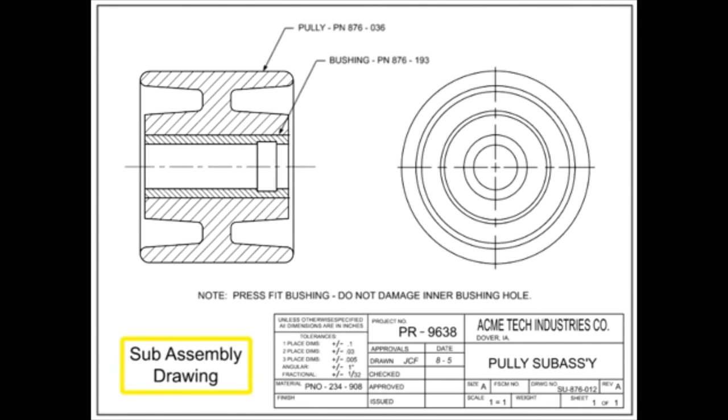Subassembly drawings are made of two or more separable items that join to form a subassembly that is then used on a higher level assembly.